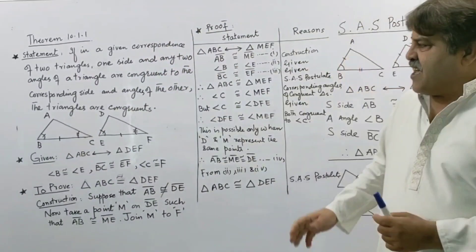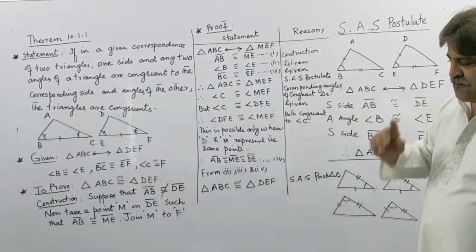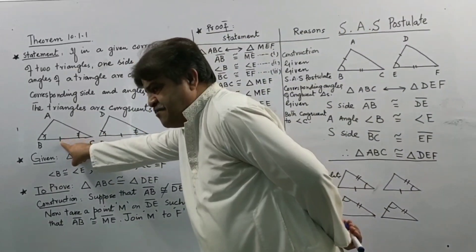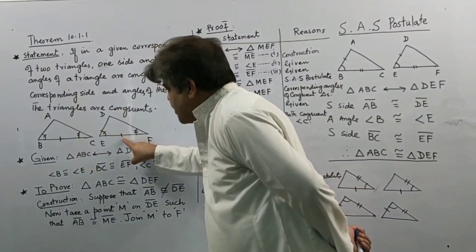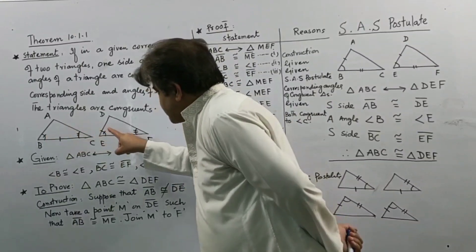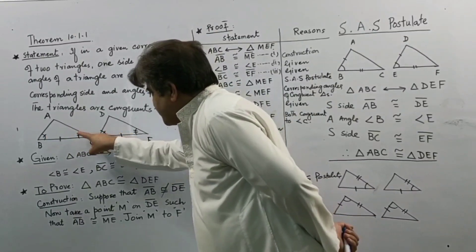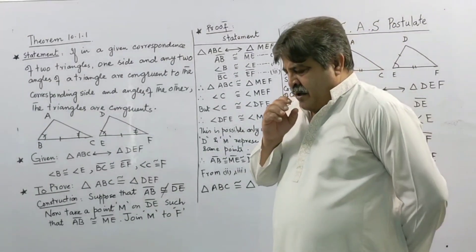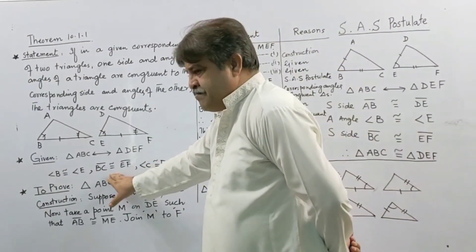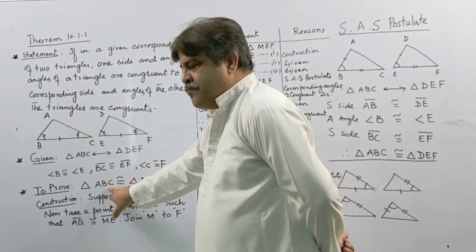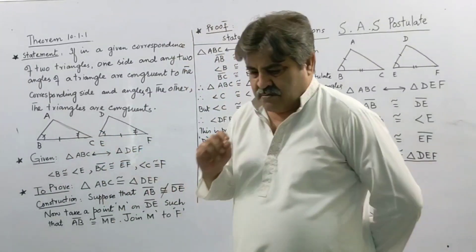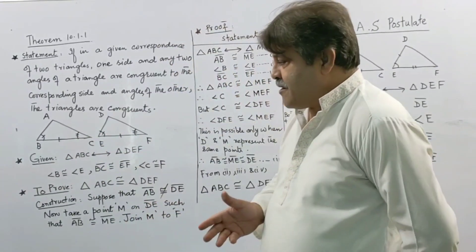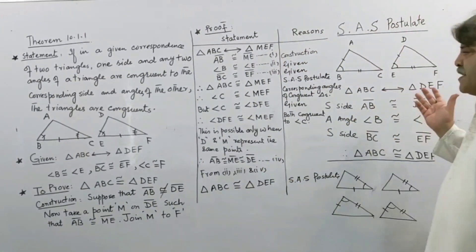How can we apply this postulate to our theorem? What is given? This triangle — this side is congruent to this, this angle is congruent to this, and this angle is congruent to this. What do we have to prove? These two triangles must be congruent, and we will use this SAS postulate.